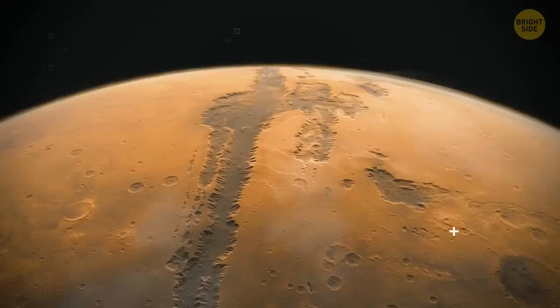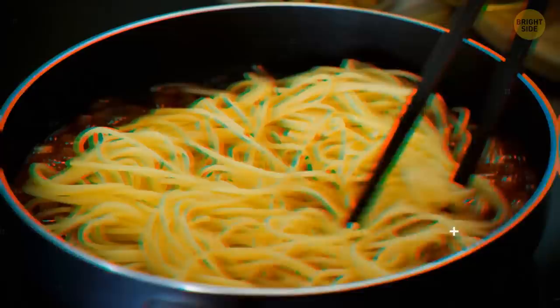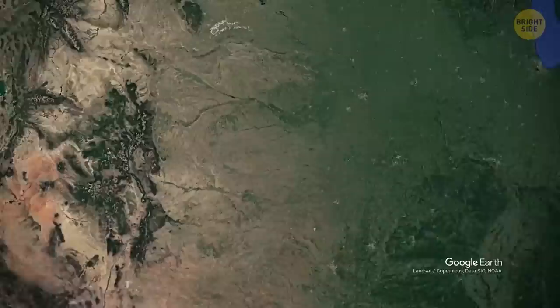The surface of Mars is cut by a huge canyon system known as Vals Marineris. Sounds like a pasta sauce. If it were on Earth, it'd stretch all the way from New York to California, over 3,000 miles.